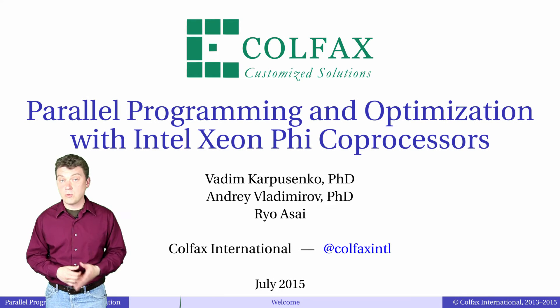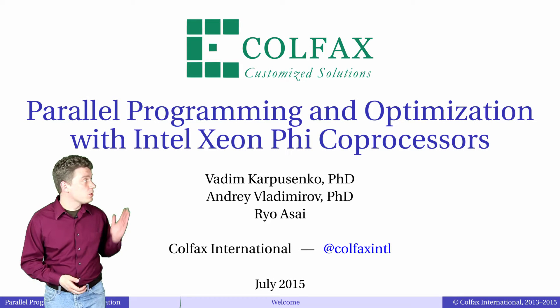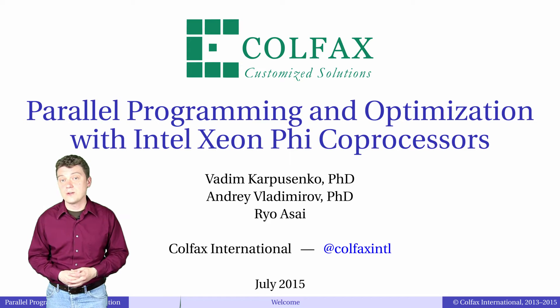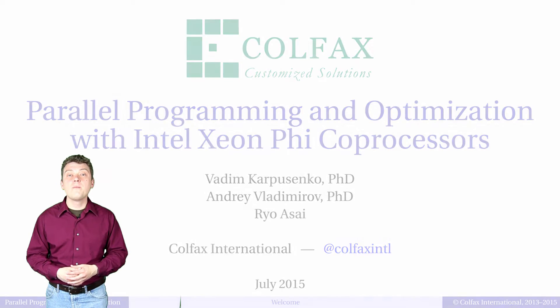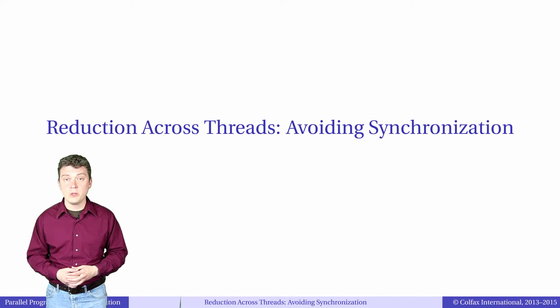Hello. In this episode 4.8 of our video course Parallel Programming and Optimization with Intel Xeon Phi processors, we'll talk about parallel reduction in OpenMP for loops.